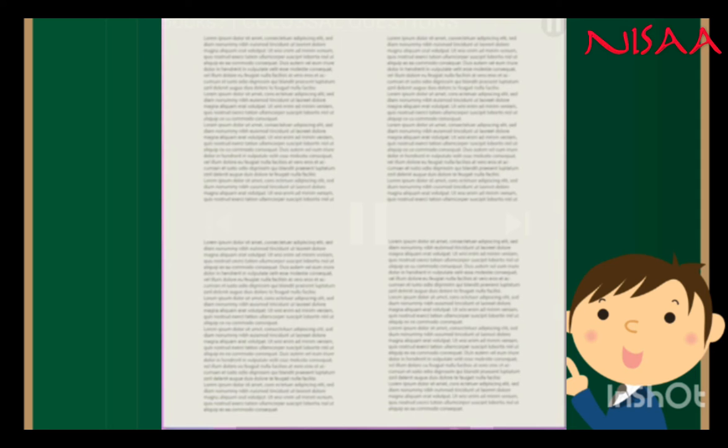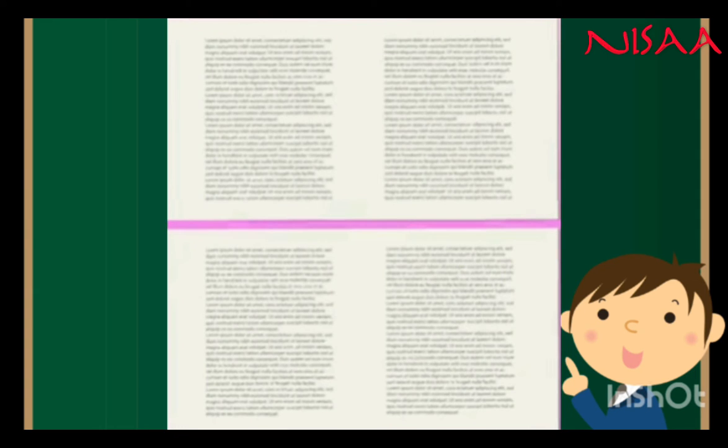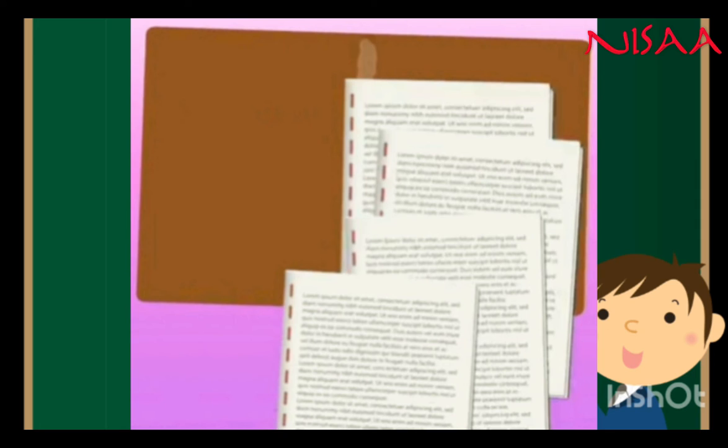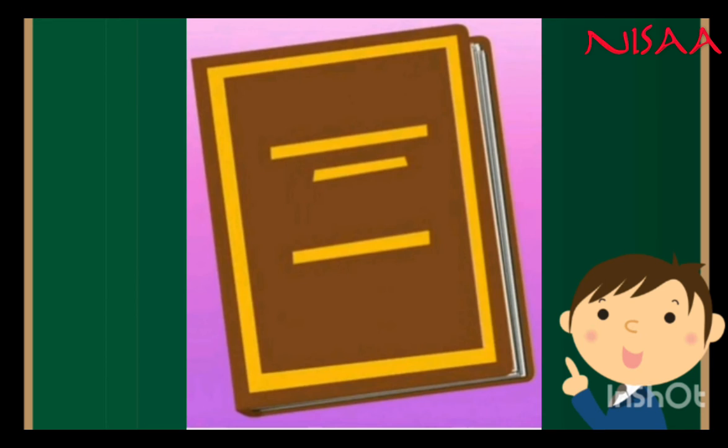First, the words and pictures are printed on papers. Then, the printed papers are cut to the size of a book and all the papers are bound together. At last, a strong hardcover is added to protect the papers. And the book is ready.